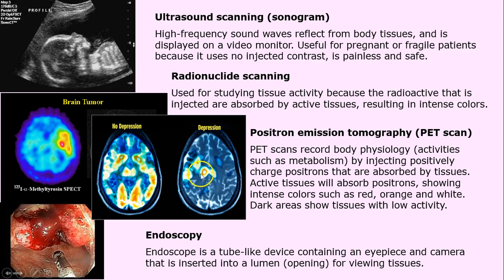Positron emission tomography — PET scan — records body physiology. Unlike an x-ray, which gives a snapshot of dense versus less dense tissue, a PET scan shows activity. Intense colors like reds and oranges indicate very active areas, while dark areas are less active and not absorbing much of the radioactive isotope.